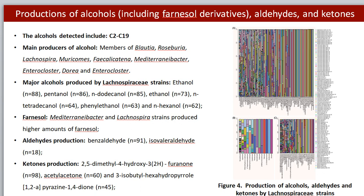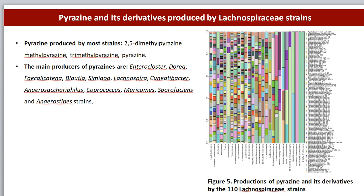Mediterraneibacter and Lachnospira strains produced higher amounts of farnesol. Aldehydes and ketones were produced by Lachnospiraceae strains as well. Pyrazines and their derivatives were considered health-beneficial, and they were also produced by Lachnospiraceae strains. Enterocloster, Fecalicatena, and Blautia are the major producers.